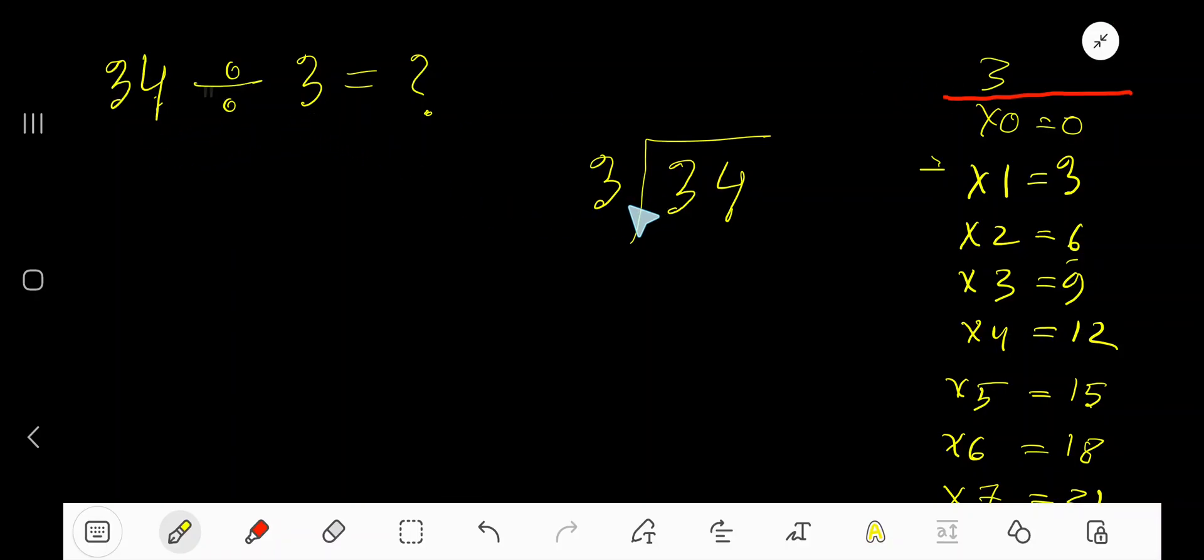34 divided by 3. Here 3 is the divisor, so we need the multiplication table of 3. 3 times 0 equals 0, 3 times 1 equals 3, 3 times 2 equals 6, 3 times 4 equals 12. To find the multiplication table of 3, just add 3 to the previous step: 0 plus 3 equals 3, 3 plus 3 equals 6, 6 plus 3 equals 9.